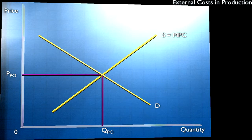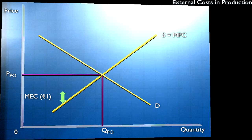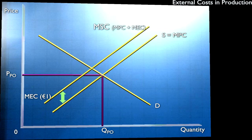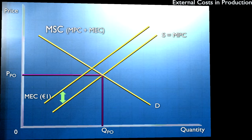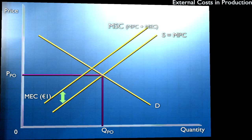So if we assume for a moment that each unit of output that the firm produces does a pound's worth of damage to society in external costs, then that marginal external cost marked on the diagram is one pound. The marginal social cost curve is displaced upwards by a pound — that is to say, the marginal social cost is marginal private cost plus marginal external cost. So the social optimum output is where marginal social cost and demand are equal.